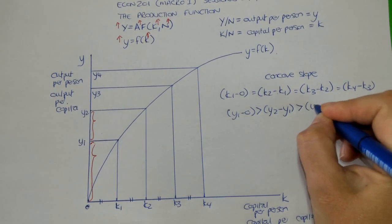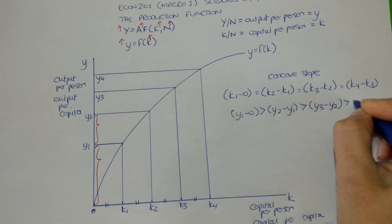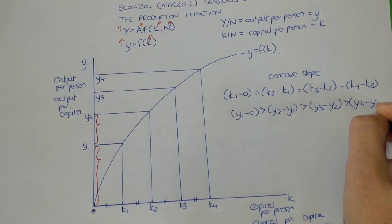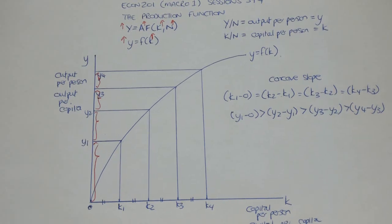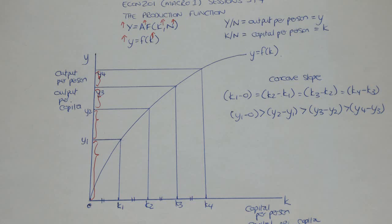We can continue and show that Y3 minus Y2 will be greater than Y4 minus Y3. That, in essence, is our per capita production function, and there are some things to remember. First, the per capita production function shows the relationship between capital stock per person and output per person. Second, this relationship is positive — increasing capital stock per person increases output per person. Third, the production function embodies the law of diminishing marginal returns: increases in capital stock per person will increase output per person, but at a decreasing rate.